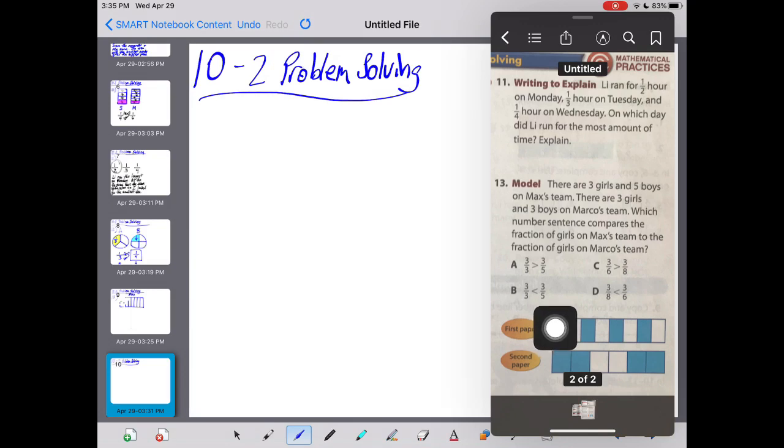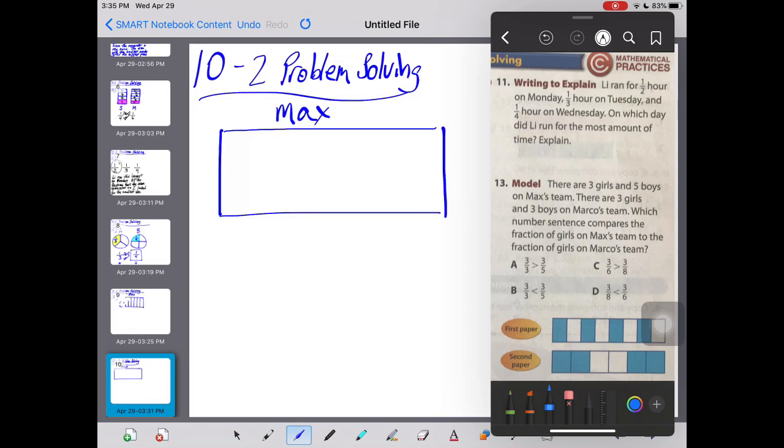Let's take a look at this. So we're looking at Max's team against Marco's team. Max's team says there's three girls and five boys. So I'm going to draw a rectangle to represent Max's team. There's three girls and five boys, so with that, that makes me think I've got to see how many people are on the team. So three plus five. There's eight kids on the team.